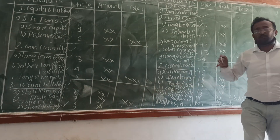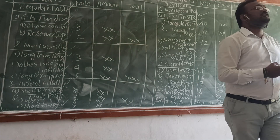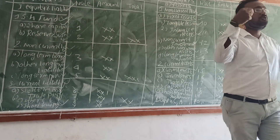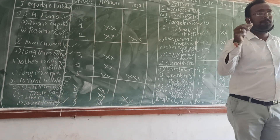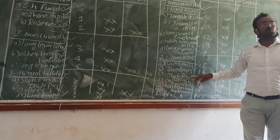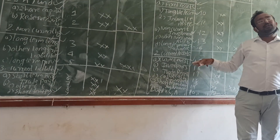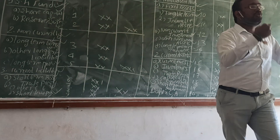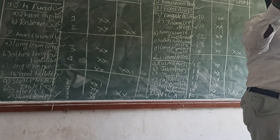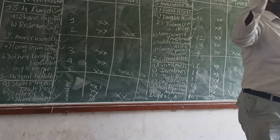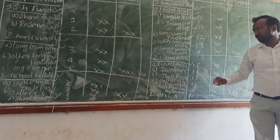Next is trade receivable. In the case of trade receivable, we usually take two parts: number one, debtors; and number two, bills receivable. Both are called trade receivable. Note that debtors minus provisions for bad debts should be put under trade receivable.